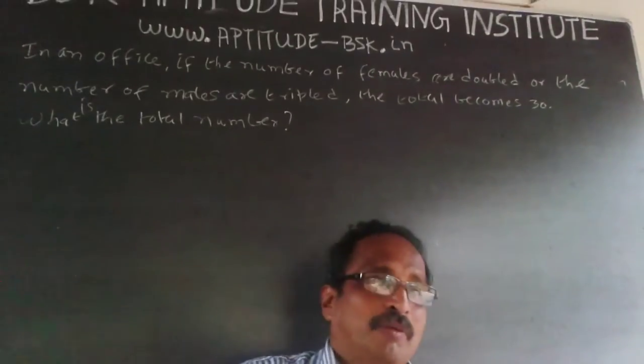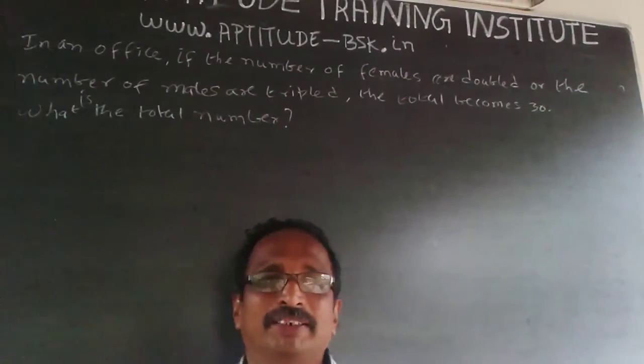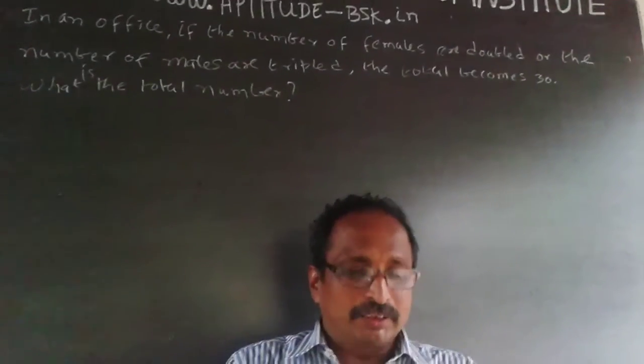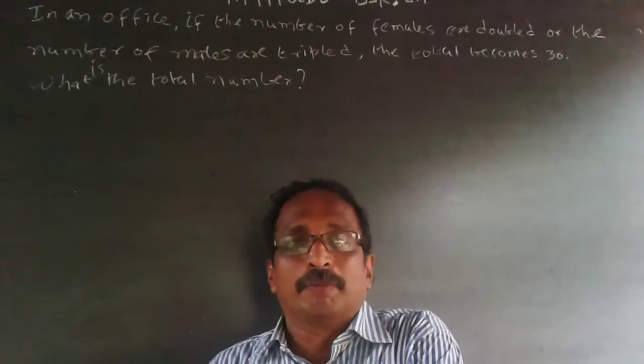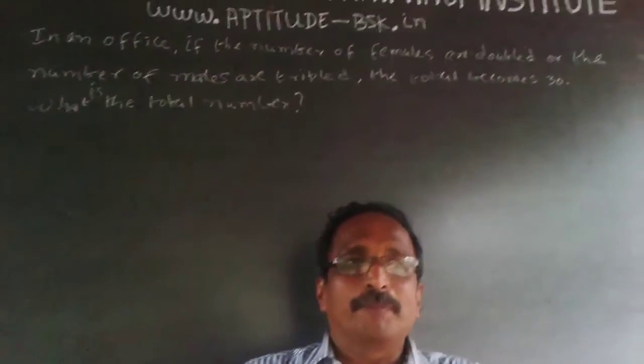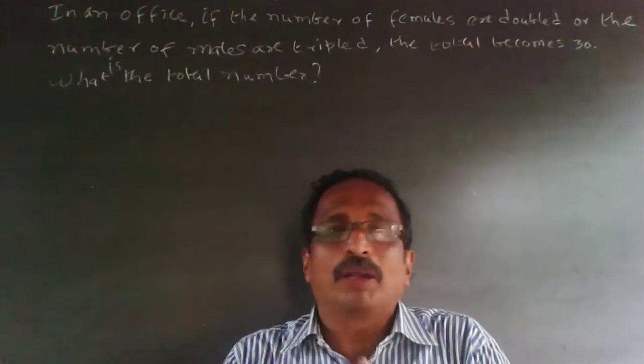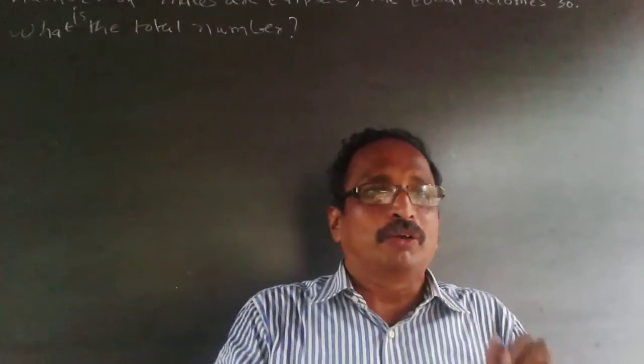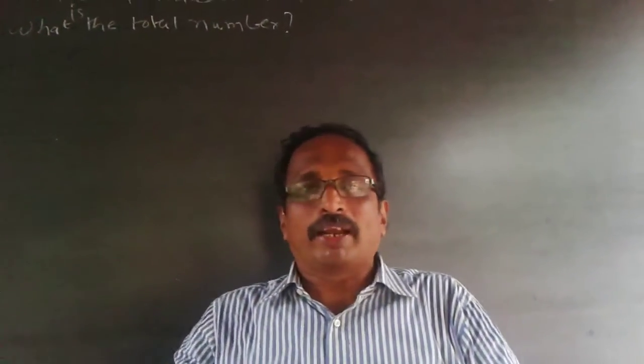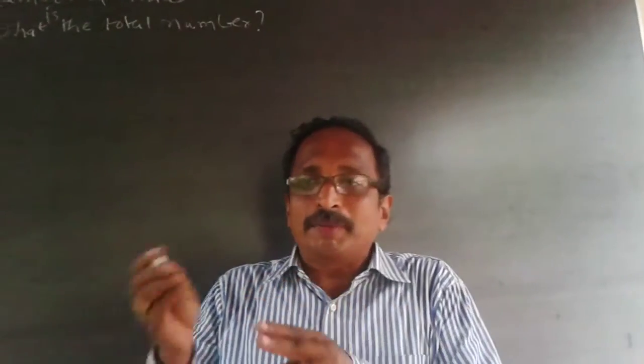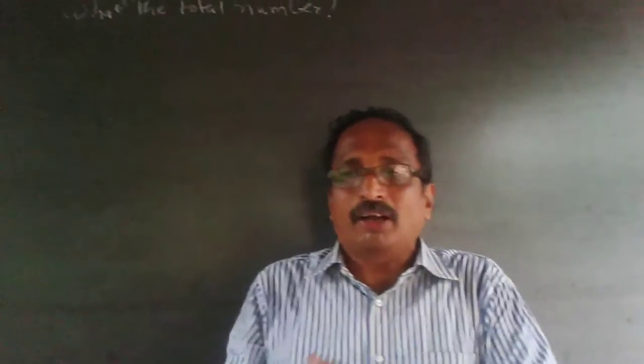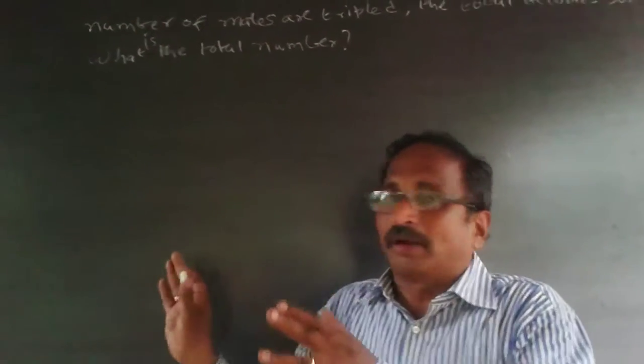This question is about males and females in an office. It's a simple equation solving problem. Some students make a mistake - they write 2F = 30 or 3M = 30 and get 25 as the answer. That's wrong because if the females are doubled, the males will still be there. They're not going out.